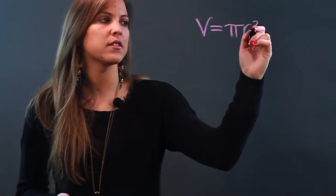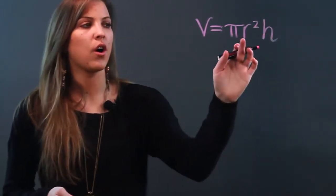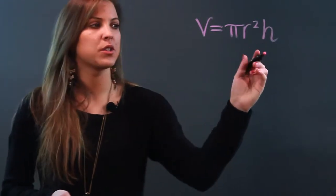So we'll do a cylinder first. The formula for the volume of a cylinder is v equals pi r squared h. So the two things that we need from our cylinder is r, which is our radius, and h, which is our height.